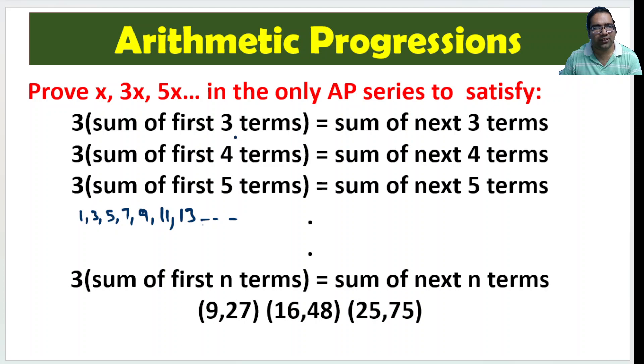Now 3 into sum of first 3 terms. What is the sum of first 3 terms? 3 into 9. 3 into 9 is equal to sum of next 3 terms. 11 plus 9, 20, 27 which is true.